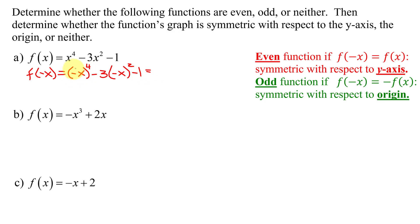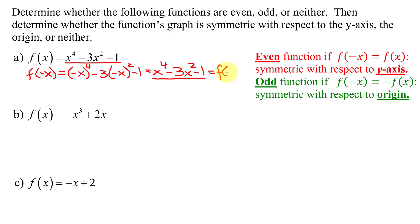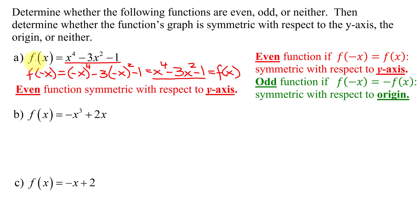Negative x to the fourth power has four negatives, which is an even number, so my answer is going to be positive x to the fourth. In the next term, I have one negative here but two here, so that's three negatives — an odd number — so my answer has to be negative 3x squared minus 1. Now is this the same as my original function? Yes, they're identical. So f of negative x equals f of x, meaning this statement is true, so the first example is an even function and its graph is symmetric with respect to the y-axis.